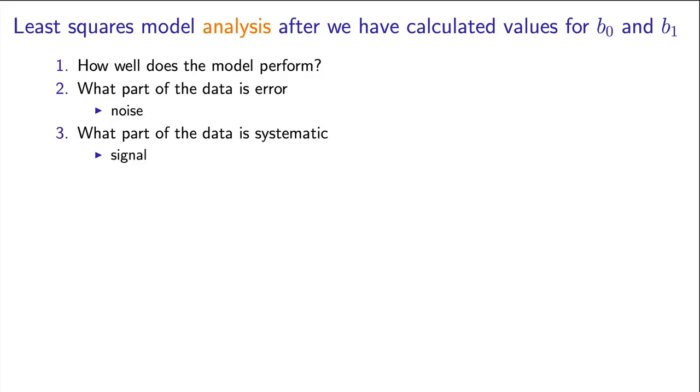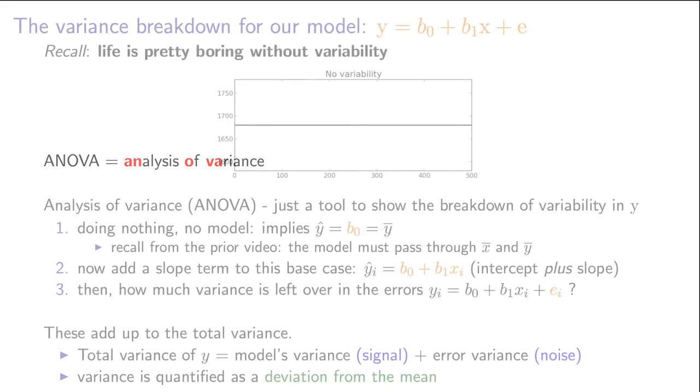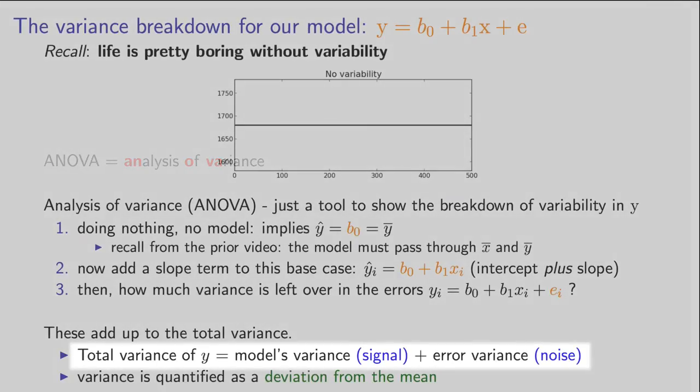And that's all that the analysis of variance ANOVA table does for us. You've likely heard that term before, so we're going to look at that and build up that concept. All that the analysis of variance does is break down which part of our data is signal and which part of it is noise, how much of it can we explain and how much of it is left over in the errors.